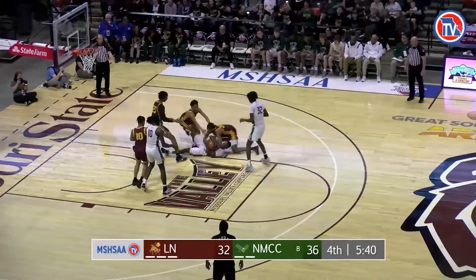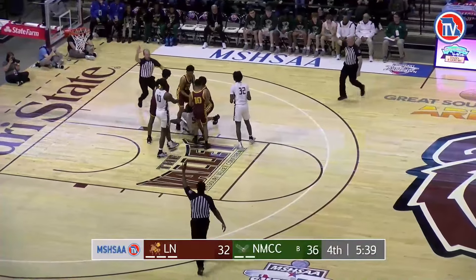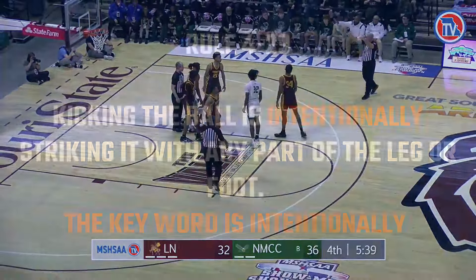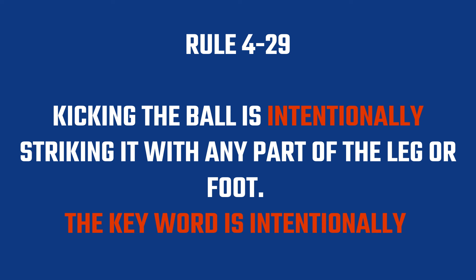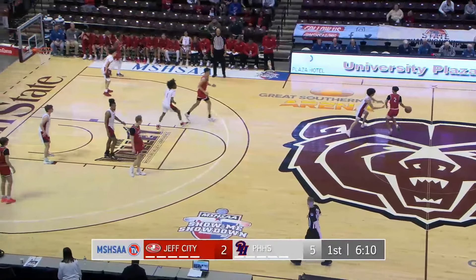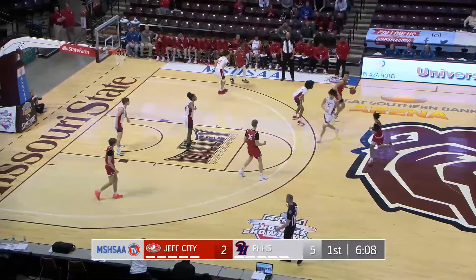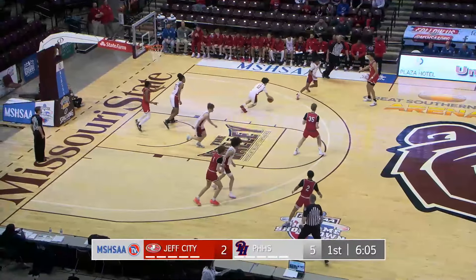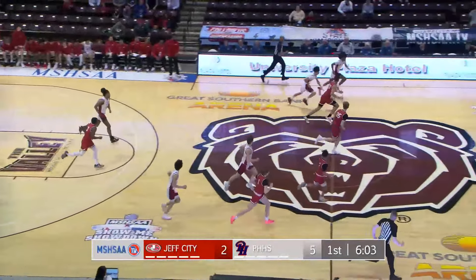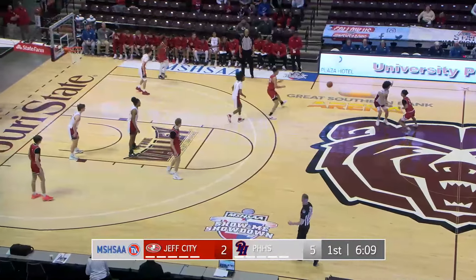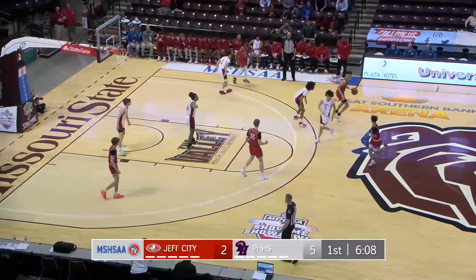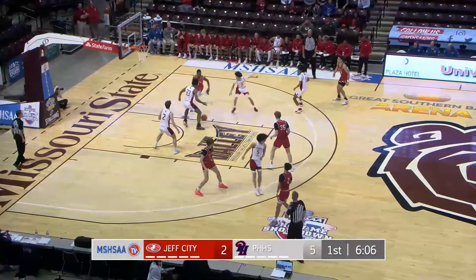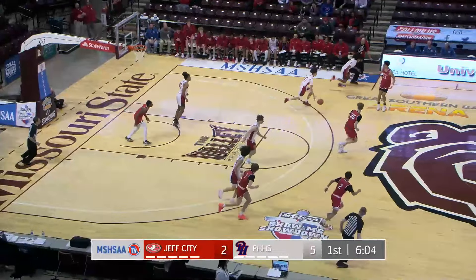Tremendous reaction by the players and the officials after the whistle was blown to make sure no extracurricular action occurred. Kicking the ball is intentionally striking it with any part of the leg or foot — the key word is intentionally. As number 3 in red is making a backdoor basket cut, number 0 in white is trying to recover and not get beat. In the process, number 23 in red makes a bounce pass that goes directly off of number 0's foot and then bounces off of his teammate's foot. Since this contact was not intentional, it is not a violation. Good whistle discipline by the officiating crew for not penalizing this action.